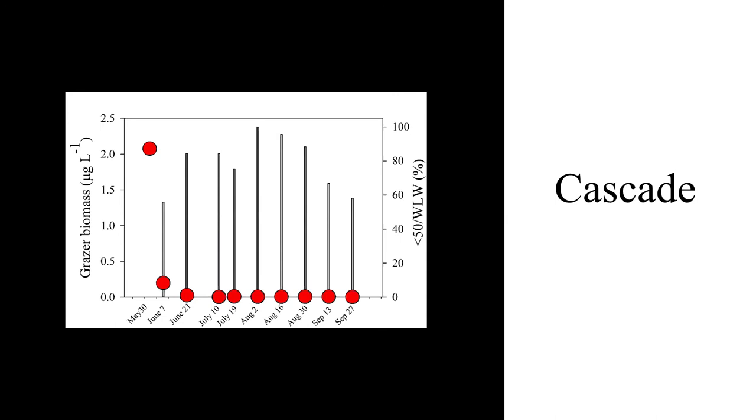By June 7th, a week later, it was almost all gone. Almost all the grazers were gone. There were some rotifers, but not a lot. That remained consistent throughout the summer. At the same time, we had an increase in the relative contribution of the less than 50 fraction to the whole lake water. For almost all summer, Lower Mill Pond was a big cauldron of edible fraction less than 50 microns in size.